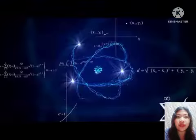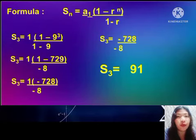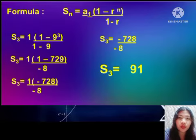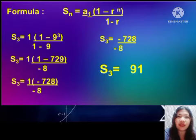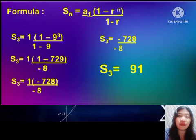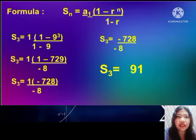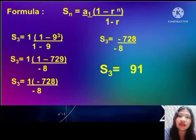Using the formula s sub n equals a sub 1 times (1 minus r raised to n) over (1 minus r), it becomes s sub 3 because we have 3 terms. Substituting: s sub 3 equals 1 times (1 minus 9 raised to 3) over (1 minus 9). Since 9 raised to 3 is 729, we get 1 times (1 minus 729) over negative 8, which is negative 728 over negative 8. Therefore s sub 3 equals 91.